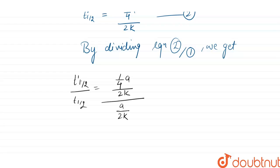So here some terms are getting cancelled. This 2k will get cancelled with this 2k, this A will get cancelled with this. So that means T dash half upon T half will be equals to 1 by 4.